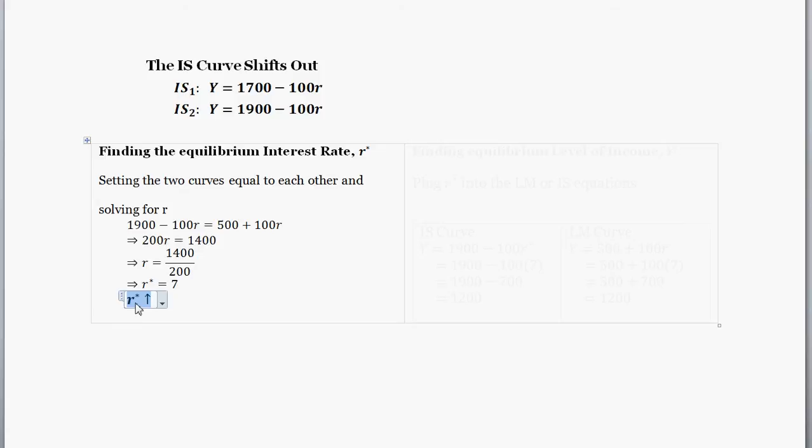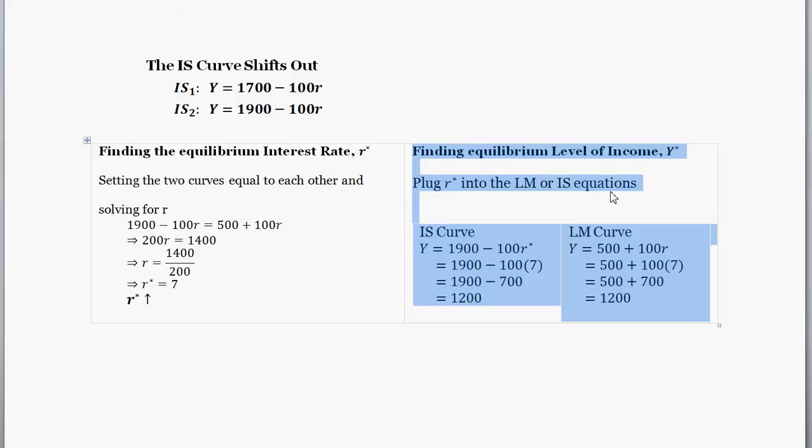So now that we have an equilibrium real interest rate, we now need to find the equilibrium output or income. So how do we do that? Well, once we have our equilibrium real interest rate, all we have to do is plug that back into either our IS curve equation or our LM curve equation. You can plug it into either, because in either you'll get the same answer. So, you know, I did the work for both here. So plugging it into IS and LM curve, we find an equilibrium output, you know, that is to say Y star of 1200.